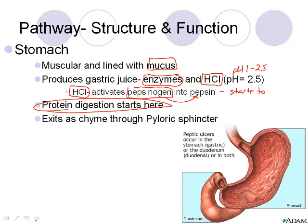Once the food is partially broken down, we have partially digested carbohydrate, partially digested protein, and non-digested fats — we call this chyme. It's very acidic due to the HCl. The chyme flows through a sphincter; when ready, it exits through the pyloric sphincter into the small intestine. The cardiac sphincter is at the top and the pyloric sphincter is at the bottom, entering the small intestine.